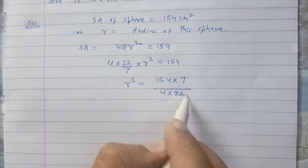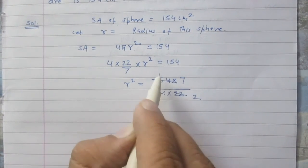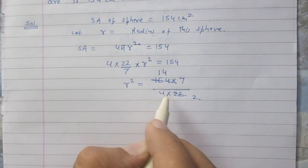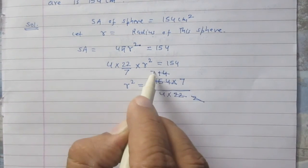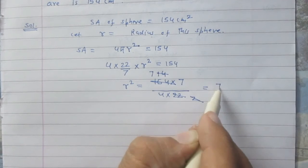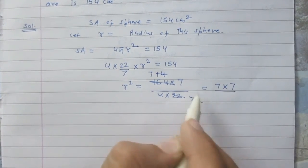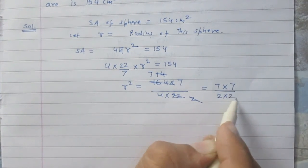Being multiples of 11, 11 twos are 22 and 11 fourteens are 154. Again we will get 2 sevens are 14, so it is 7 × 7 divided by 4 that can be written as 2 × 2.